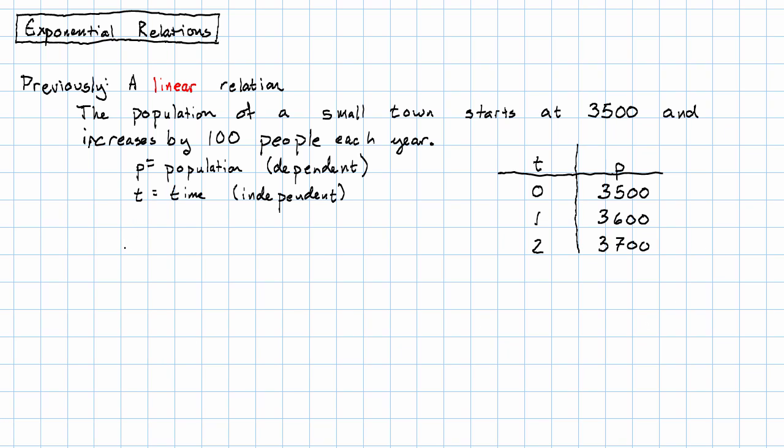We get the equation p equals the starting value, 3,500, plus the rate of change times t.